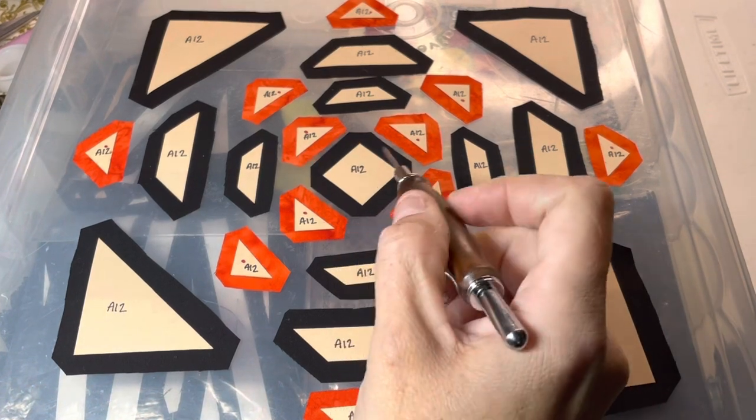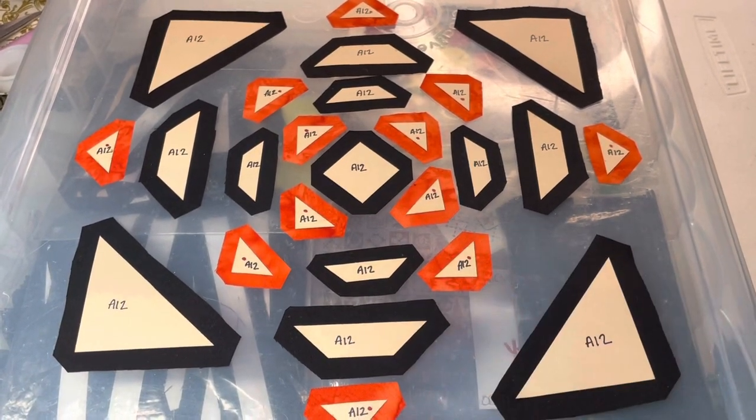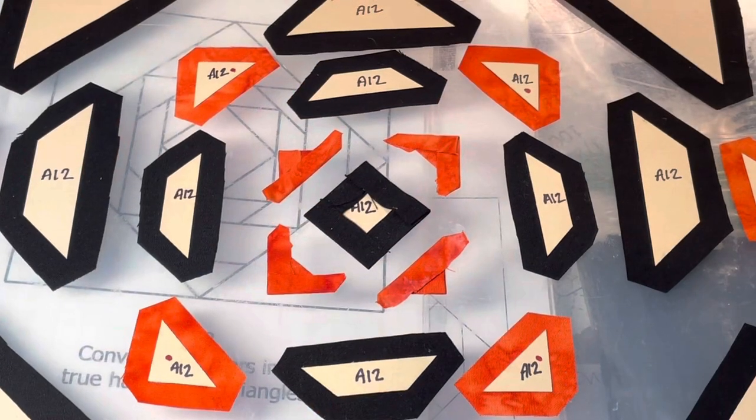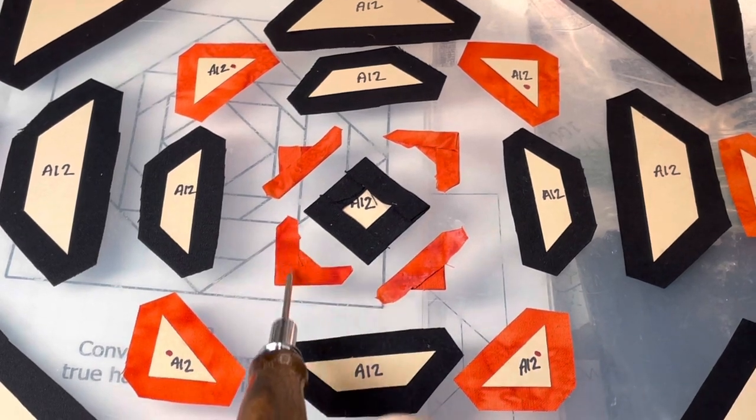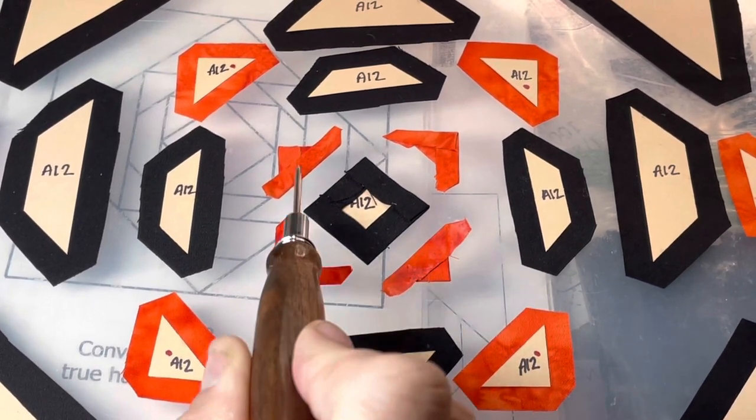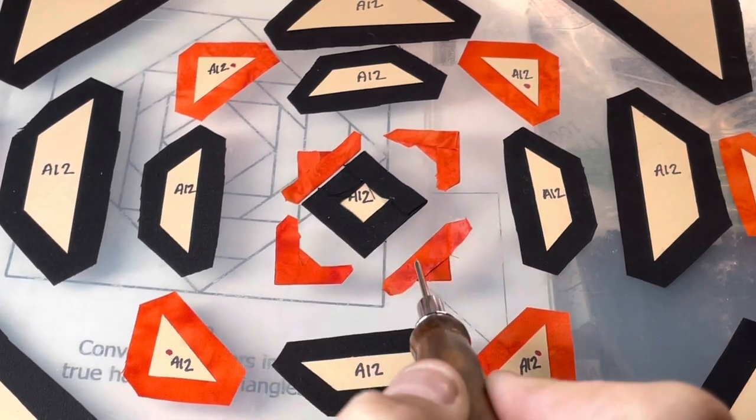So the first thing I'm going to do is baste these five center pieces and get those assembled. So I've got my center pieces basted, and I did decide to do opposites—two one way and two the other. So I'm going to go ahead and attach these to my center square.